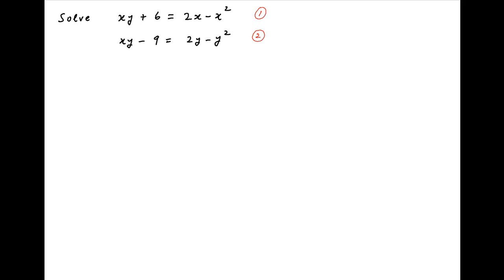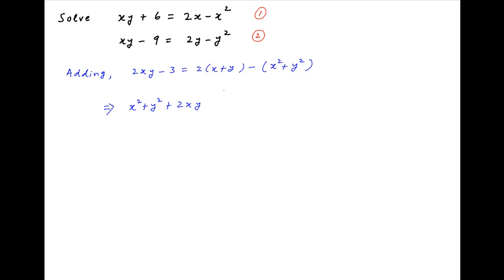We are given two equations; let's denote them by 1 and 2 respectively. Adding equations 1 and 2, we get 2xy minus 3 on the left hand side equal to 2 times (x plus y) minus (x squared plus y squared) on the right hand side. Moving all terms to the left hand side, we get x squared plus y squared plus 2xy minus 2 times (x plus y) minus 3 equals 0. This implies that (x plus y) whole square minus 2 times (x plus y) minus 3 equals 0.